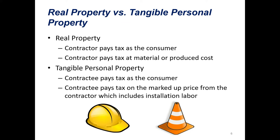Why is this important? The determination of whether something is real property or tangible personal property is going to determine who pays the tax and what the tax base is going to be. If you're dealing with real property, the contractor pays the tax as the consumer, and the tax base is the material or produced cost. If you contrast that with tangible personal property, the contractee is going to pay the tax as a consumer, and the tax base is the price that includes material cost plus labor and installation costs added by the contractor.